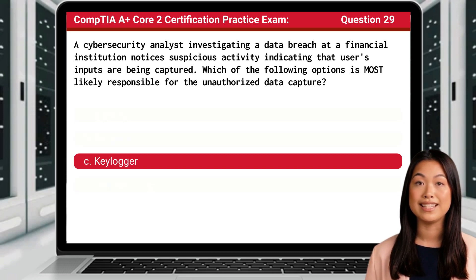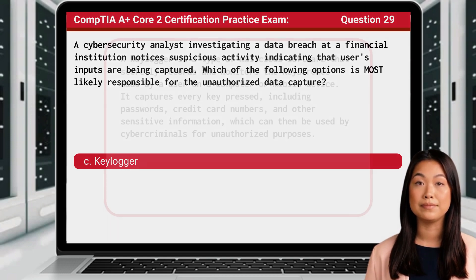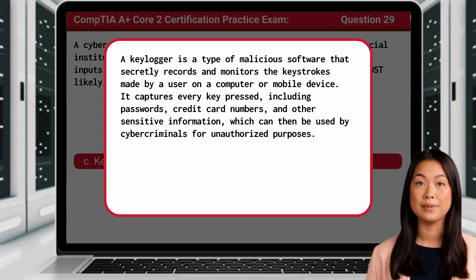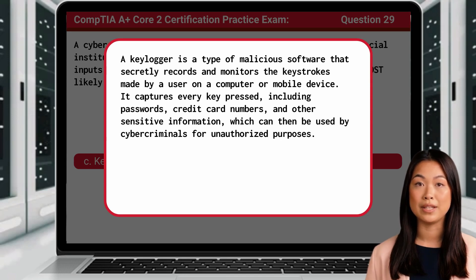The answer is C: Keylogger. A keylogger is a type of malicious software that secretly records and monitors the keystrokes made by a user on a computer or mobile device. It captures every key pressed, including passwords, credit card numbers, and other sensitive information, which can then be used by cyber criminals.